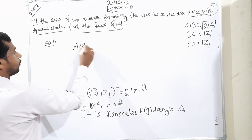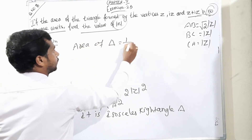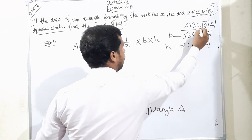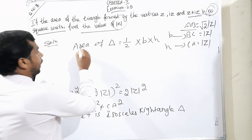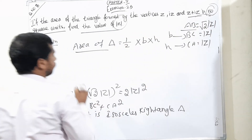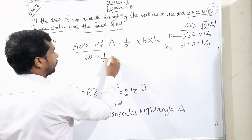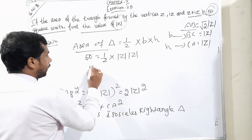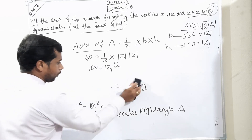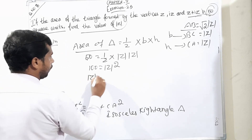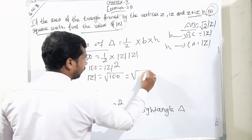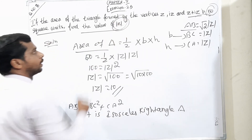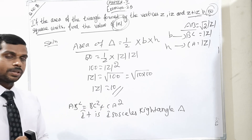For an isosceles right triangle, the area formula is half into base into height, where AB is the hypotenuse. Area is given as 50, so 50 equals half into mod Z into mod Z. Therefore 100 equals mod Z squared, and modulus of Z equals square root of 100, which is 10. The final answer is modulus of Z equals 10.